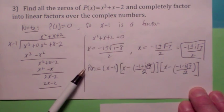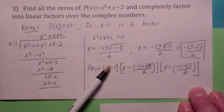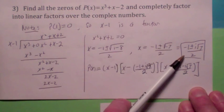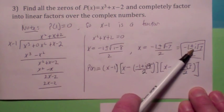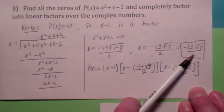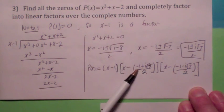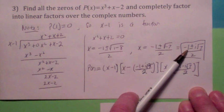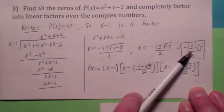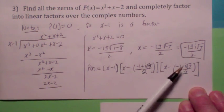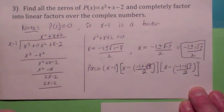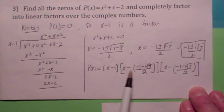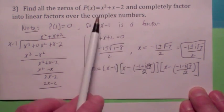So what the complete factorization theorem says is, you could factor this as x minus 1 — that would be one of the factors. And since negative 1 plus i radical 7 over 2 is a zero, x minus negative 1 plus i radical 7 over 2 is a factor. Since negative 1 minus i radical 7 over 2 is a zero, x minus negative 1 minus i radical 7 over 2 is a factor. So we factor this into linear factors. I know it seems messy, but if you were to multiply this out, you'd get this.